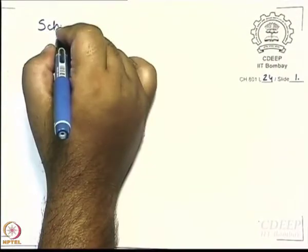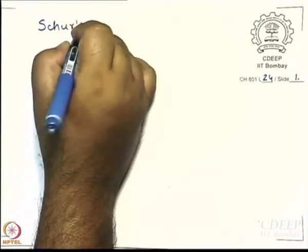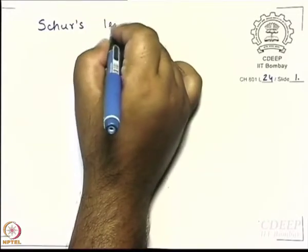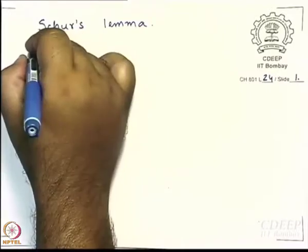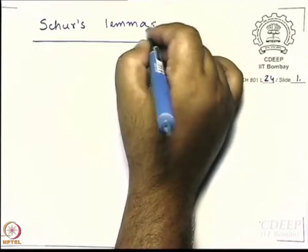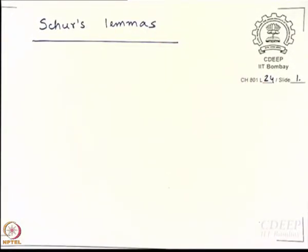Schur is the name of a mathematician. What is a lemma? A lemma can be proved — it is not an axiom. As you will see, we are going to prove them.